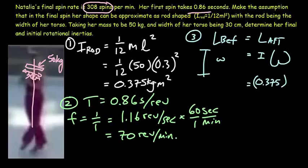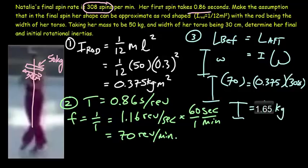So, as long as we're consistent with our units on both sides of the equation, it's all going to work out. So, our final spin rate was 308. Our initial spin rate was 70. And that means we should be able to work out this large initial moment of inertia. And I'll let you do that. It should come out to be 1.65 kilograms times meters squared.